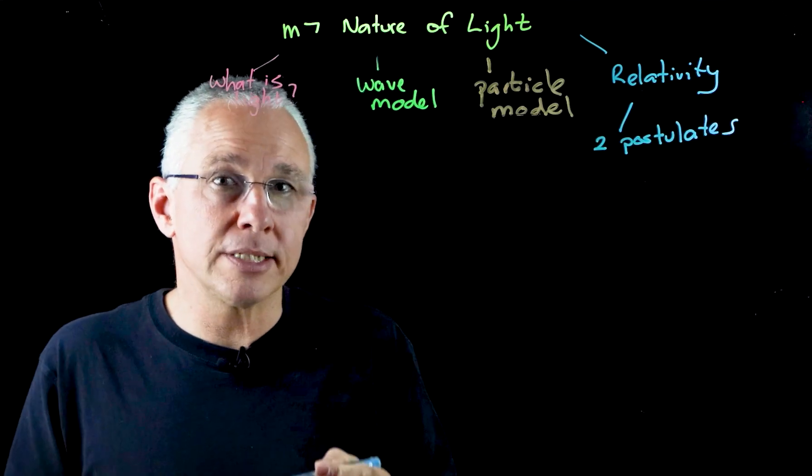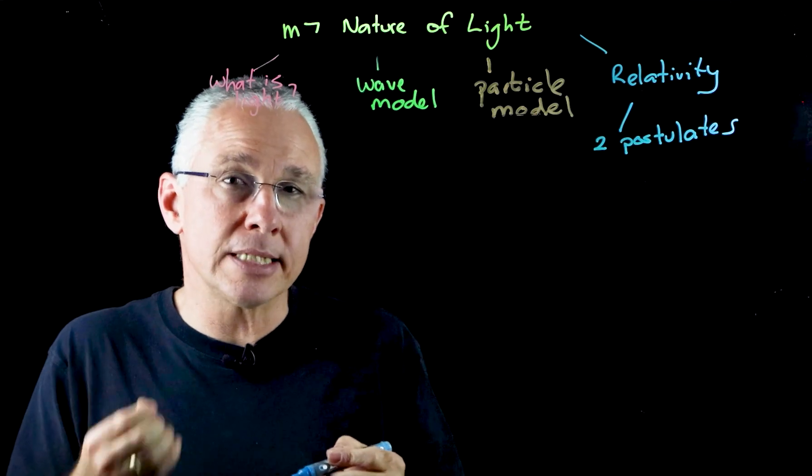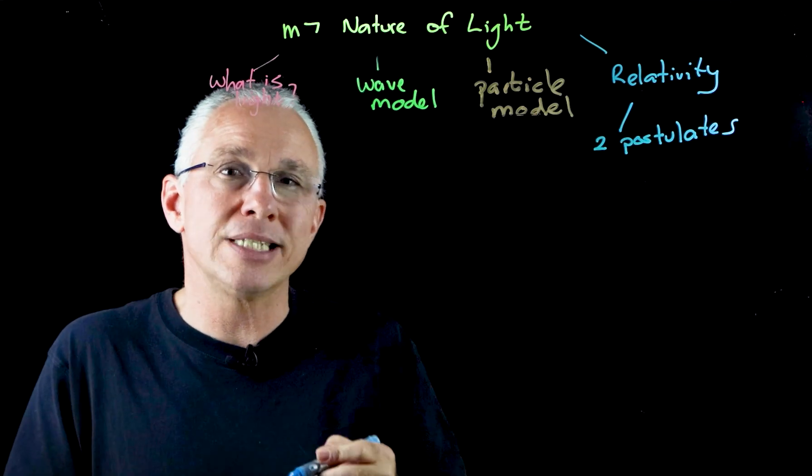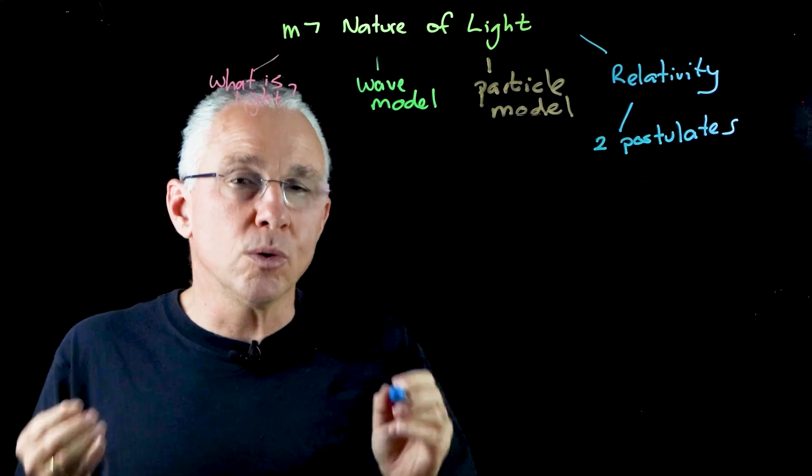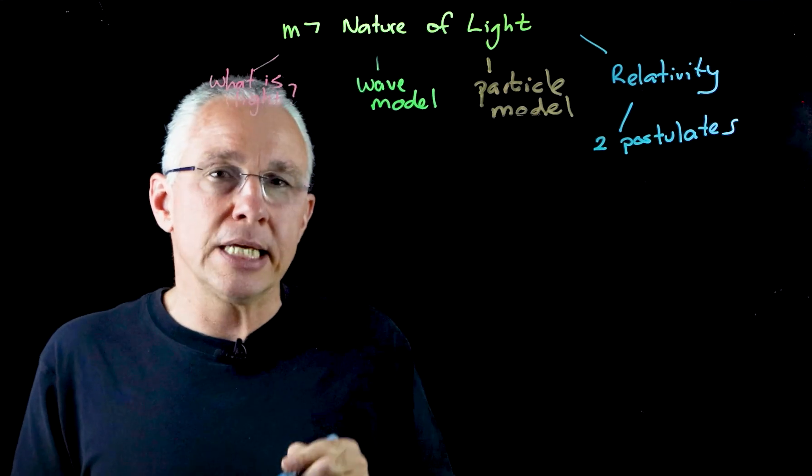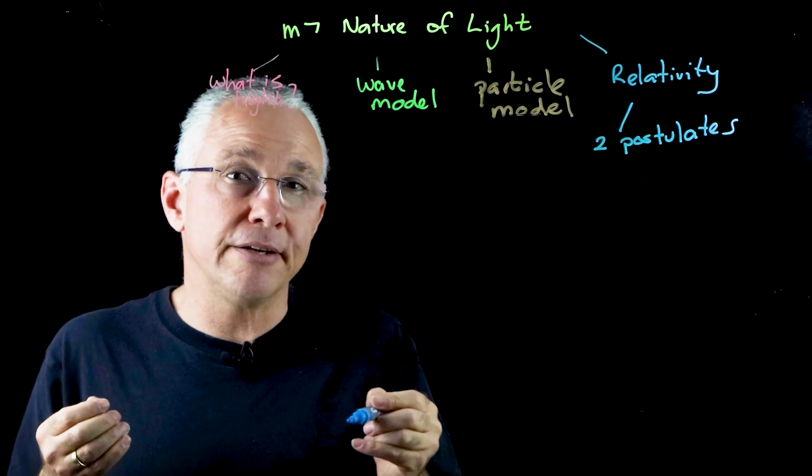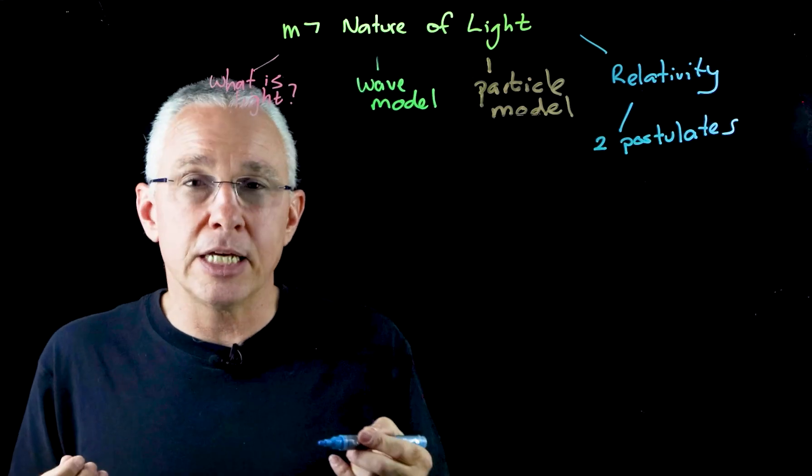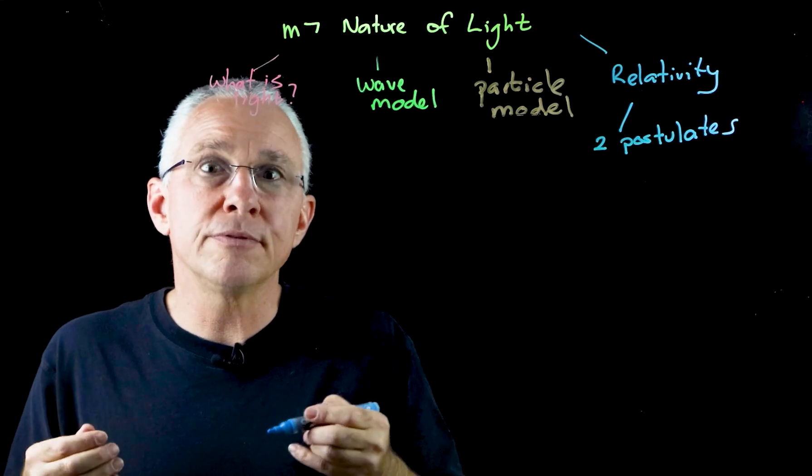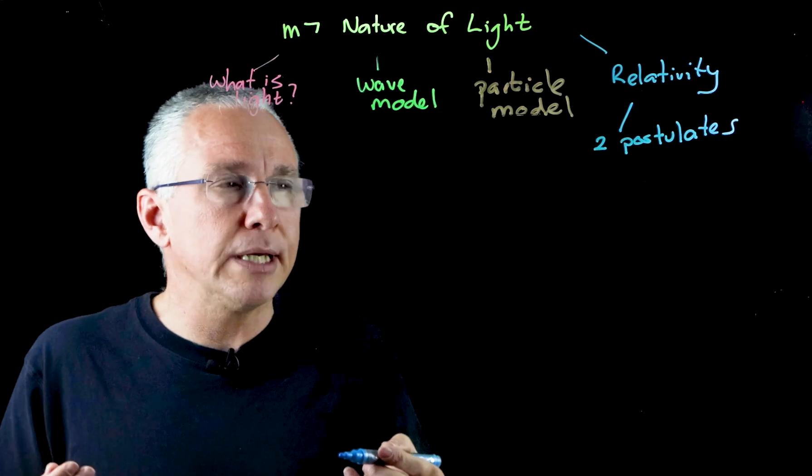And we come with two key postulates that the speed of light is always the same for whoever observes it. In other words the speed of light is constant for all observers. The second postulate says that the laws of physics are invariant in inertial frames of reference. In other words you can't do an experiment to verify that your frame of reference is moving.